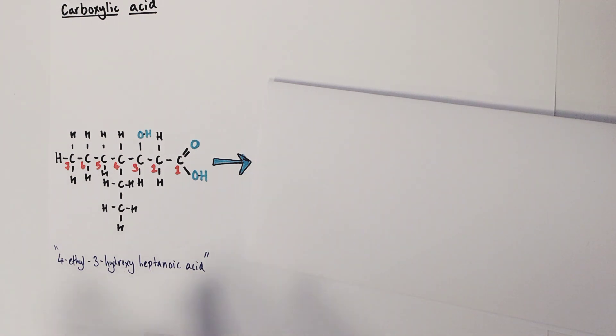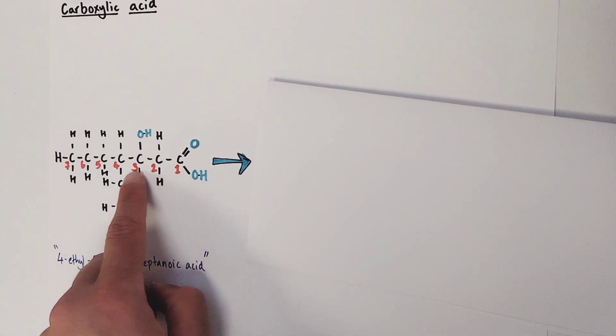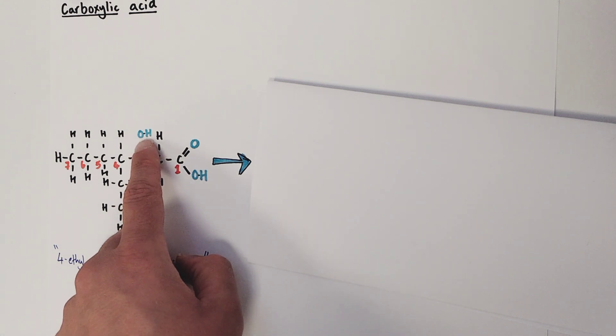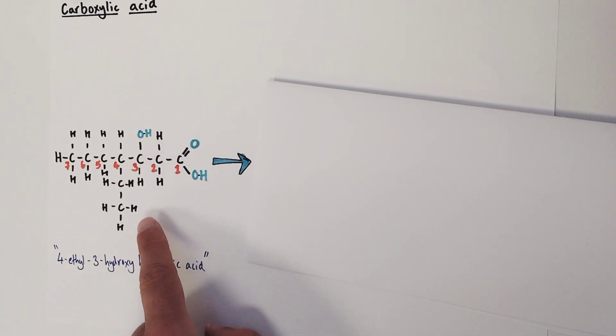Here I have the displayed formula of a carboxylic acid. It's actually 4-ethyl-3-hydroxyheptanoic acid. The longest chain in the molecule is 7 carbons. On the first carbon we have the functional group which is a carboxylic acid group. On the third carbon we have an alcohol group, a hydroxyl group. And on the fourth carbon we have a branch which is 2 carbons long and therefore is an ethyl branch. Your job is to construct a pure, proper skeletal formula for this molecule. I'm going to give you a 10 second countdown.